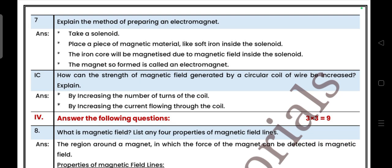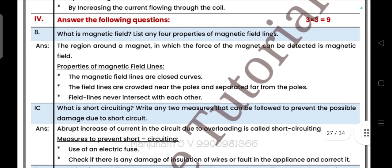Just practice these four papers, you can score above 60. Explain the method of preparing an example of electromagnet. Next question: How can the strength of a magnetic field generated by a circular coil of wire be increased? Explain.